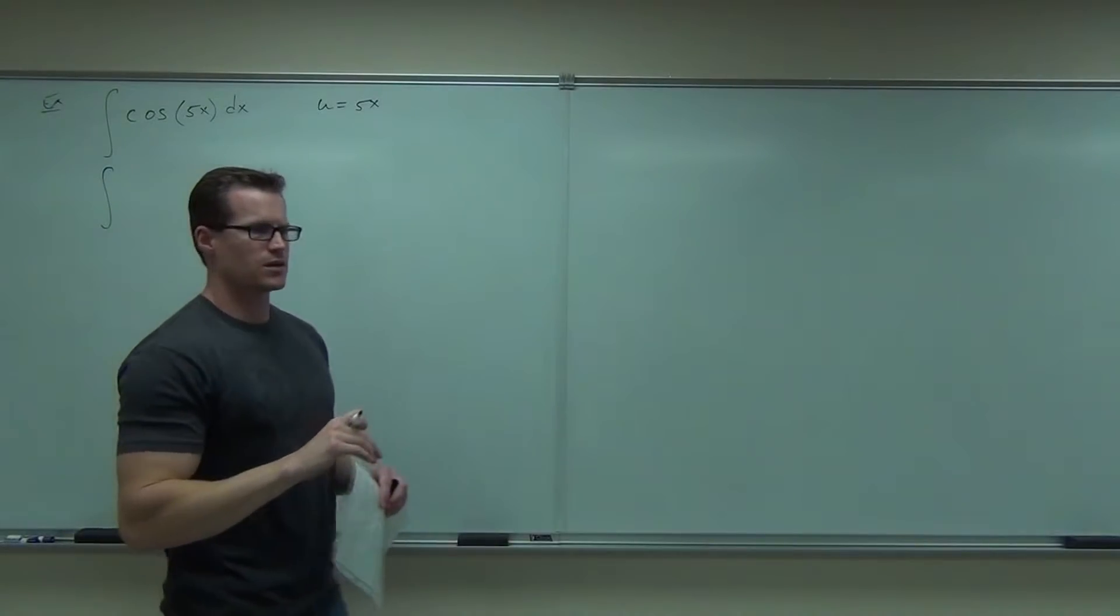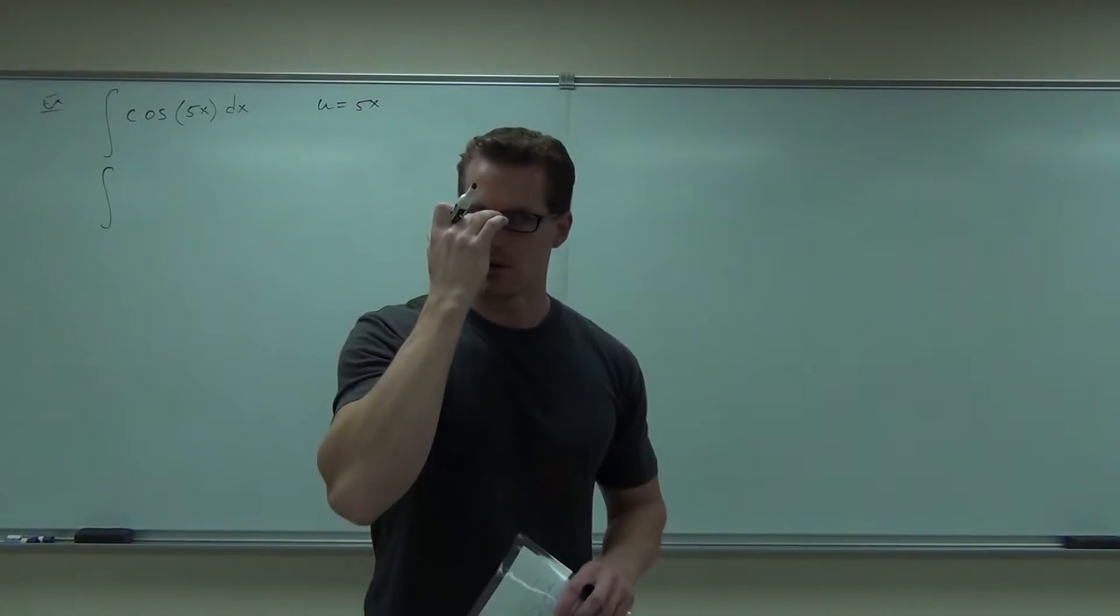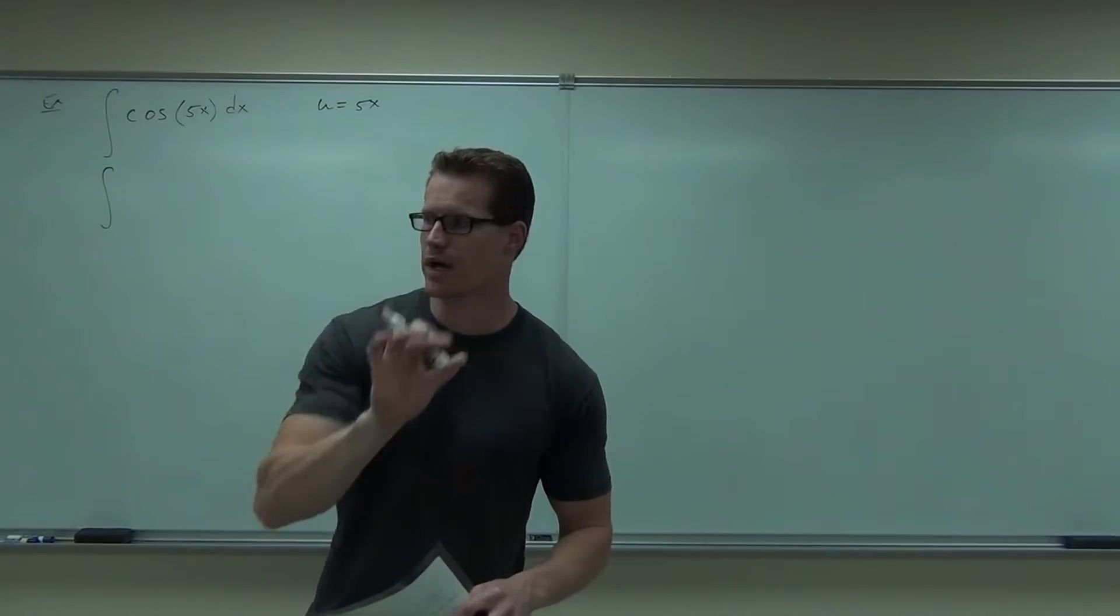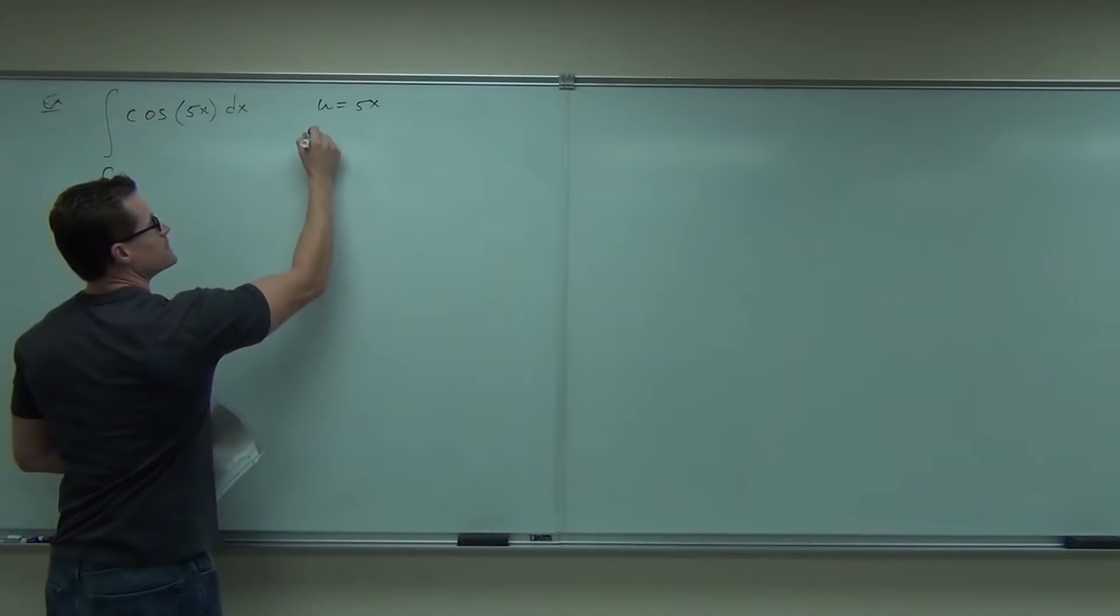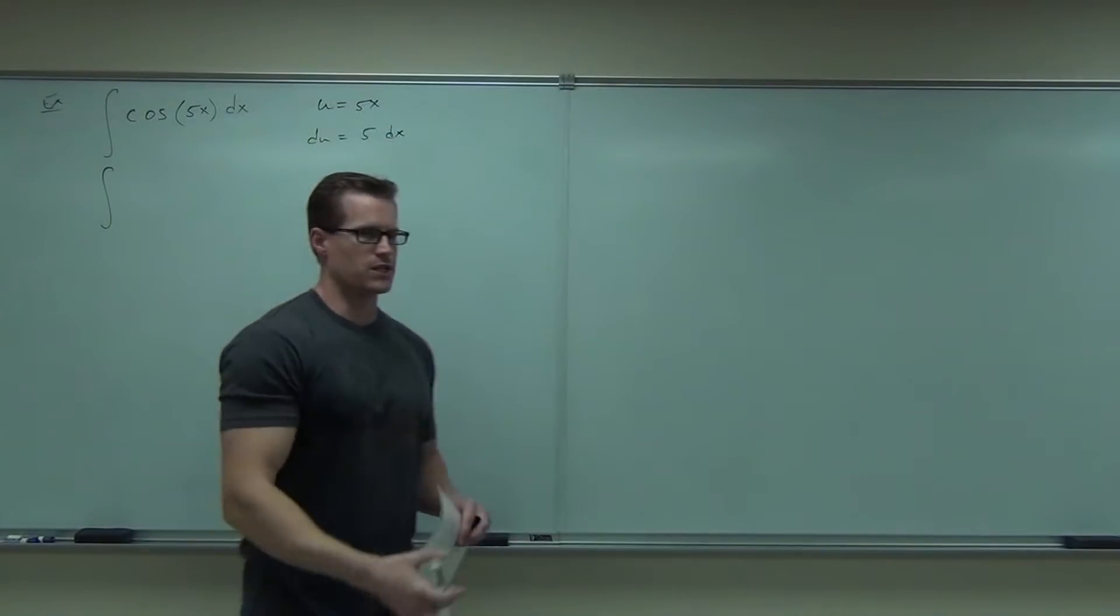Now, what did we do after we took the substitution? Okay, so derivative of both sides, basically it's implicit differentiation where we're keeping the dx on the right-hand side. So here we'll have du. Here we'll have 5 dx. And I've told you to solve for dx.